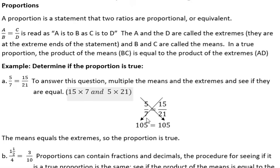When I do that, I usually draw the arrow just to show you where that 105 came from. So 15 times 7 is 105, and in the other diagonal, 5 times 21 is also 105. That means the means equal the extremes, so the proportion is true.